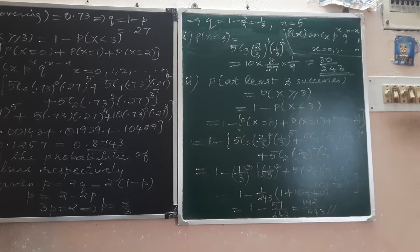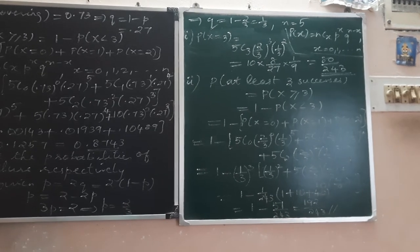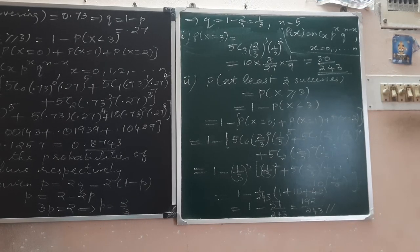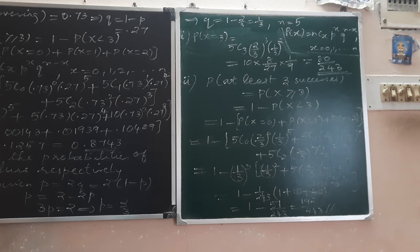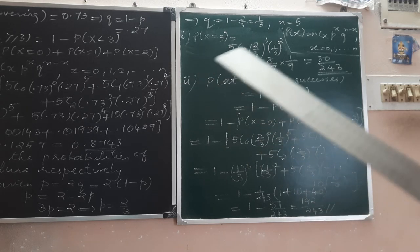P of X equals X is NCX, P power X, Q power N minus X, X taking value 0, 1, 2, 3, up to N. For subdivision 1, what is the probability of 3 successes out of 5 trials? P of X equals 3.